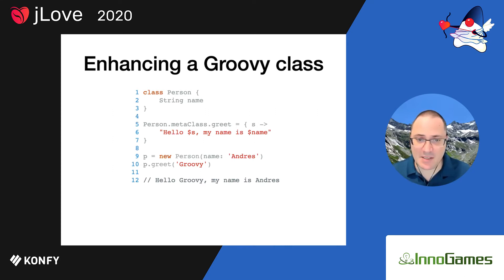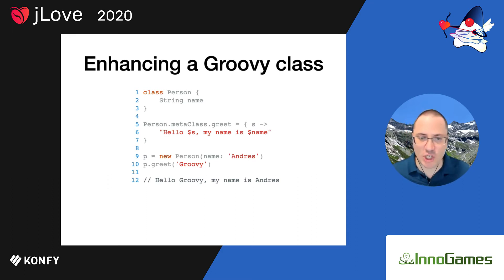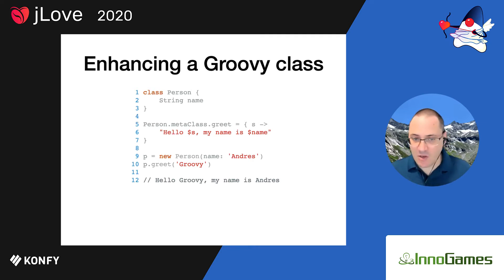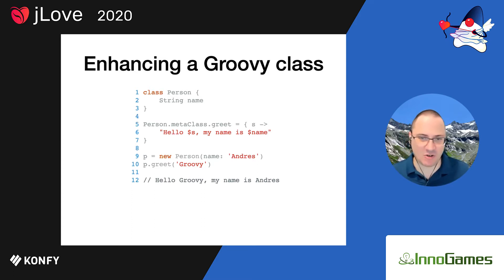We create an instance of Person using one of the Groovy constructors, and then in line 10 we can call the greet method. If you run this in a Groovy shell or Groovy console, you get a similar output. You may be thinking, yes, this is easy — it's Groovy code and it's a Groovy class, so it's bound to work.